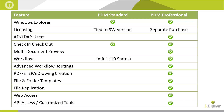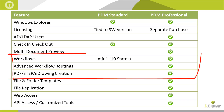We start to see more considerable differentiation in capability as we get into the workflows. In PDM Standard, only one workflow is permitted and it is limited to a maximum of 10 states, meaning all documents stored in the vault must follow the same process. Additionally, there is no means for supporting a parallel review or approval process in PDM Standard.